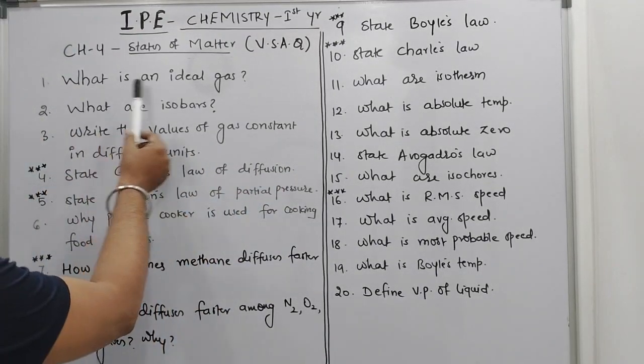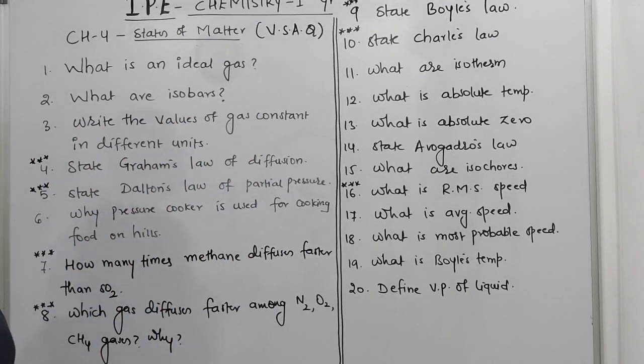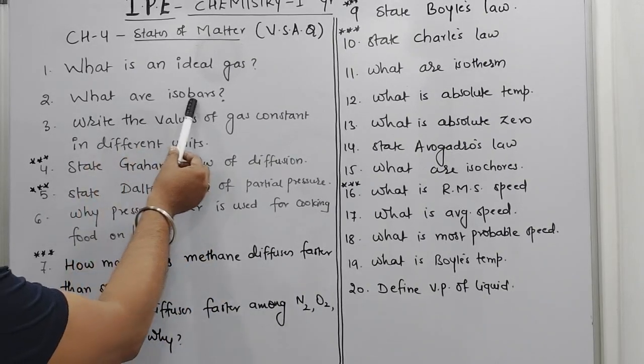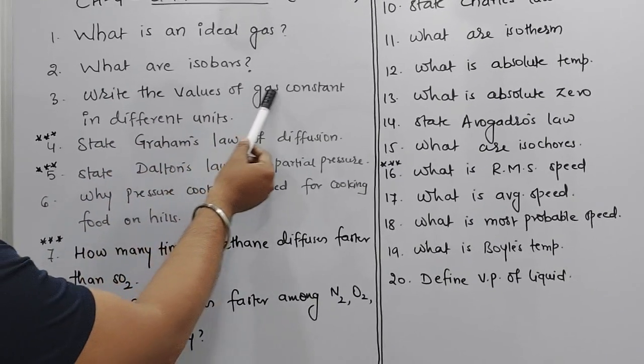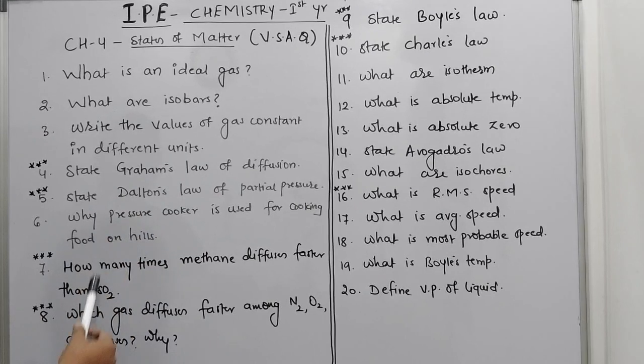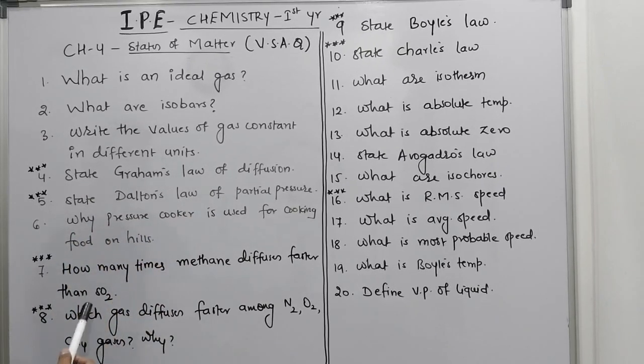First one is: What is an ideal gas? I think you are able to see. Second one: What are the ISO bars? Write the values of the gas constant in different units. State the Graham's law of diffusion.